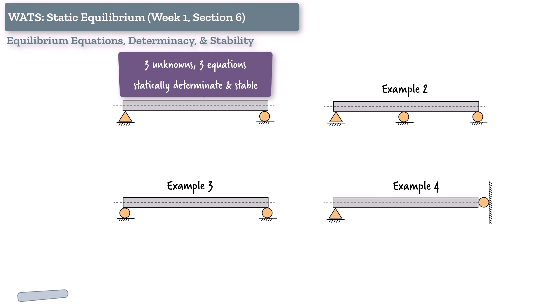In example two, we added more support, a pin and two rollers. That gave us four unknowns, but still only three equations. The structure was statically indeterminate, meaning we couldn't solve for all the reactions using statics alone.